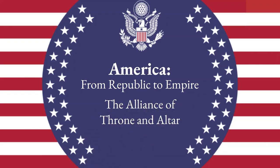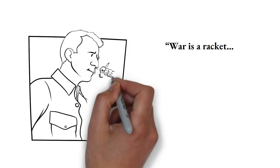The Alliance of Throne and Altar. War is a racket, Smedley Butler wrote in 1935.